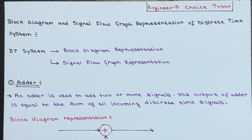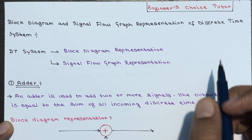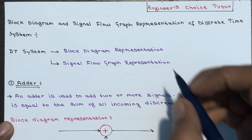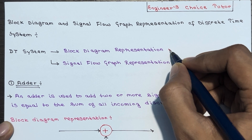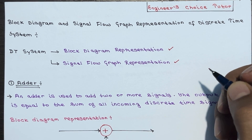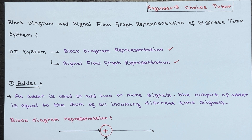In today's lecture we are going to dive into the fascinating world of block diagram and signal flow representation of discrete time systems. To represent discrete time systems visually, we have two options: block diagram representation and signal flow graph representation. The block diagram consists of basic elements such as adders, constant multipliers, unit delay elements, and unit advance elements.